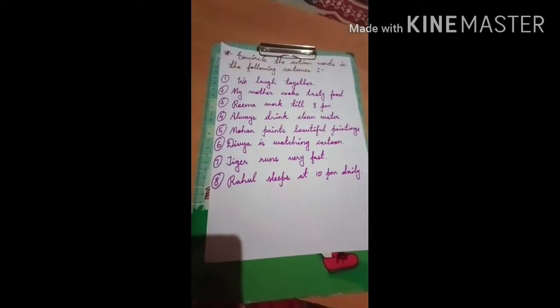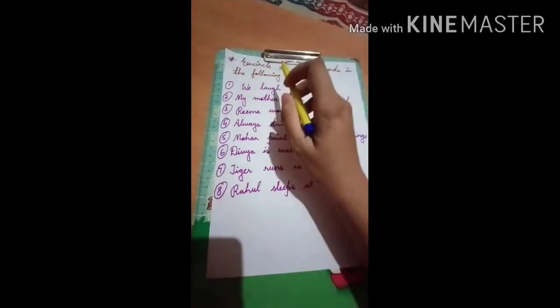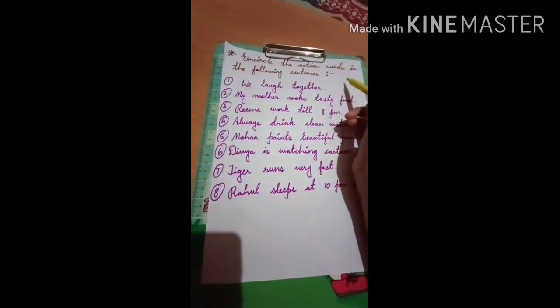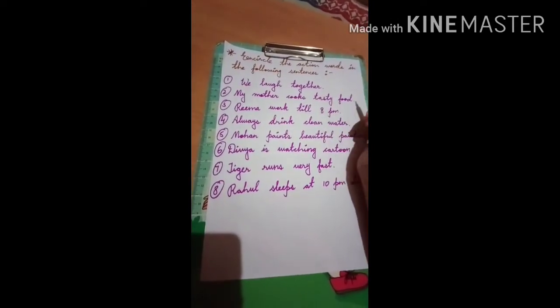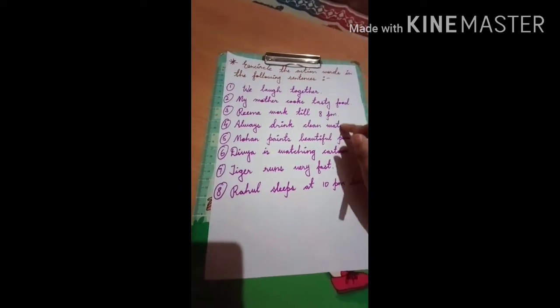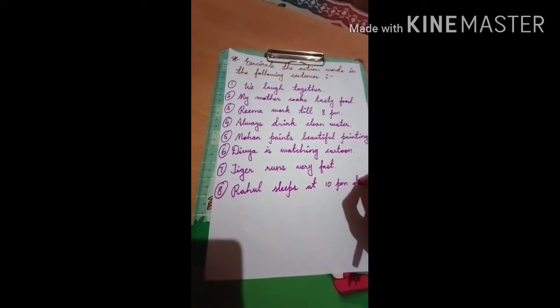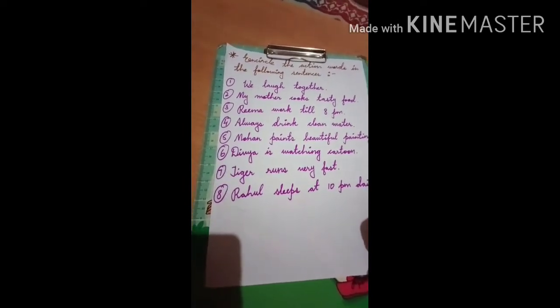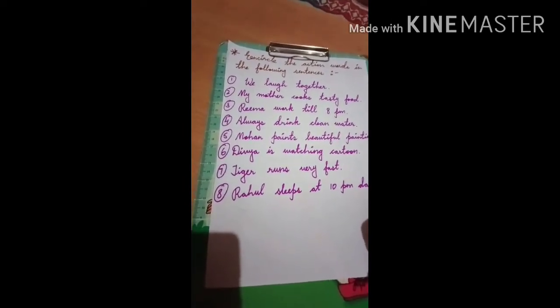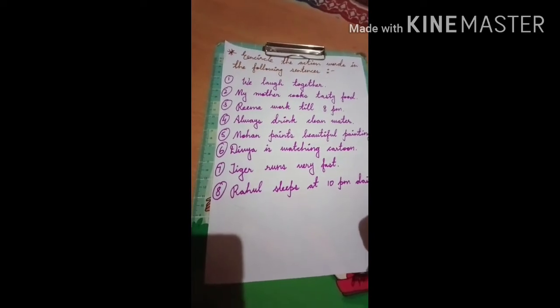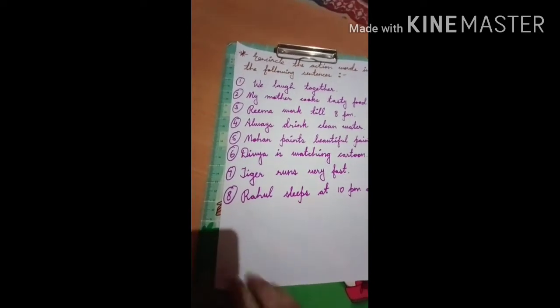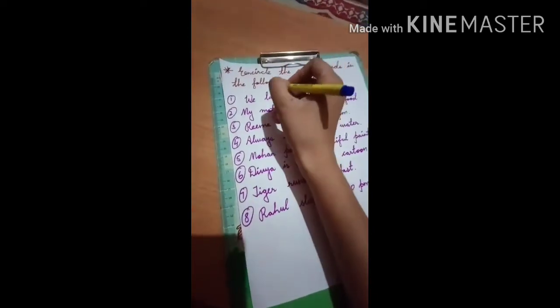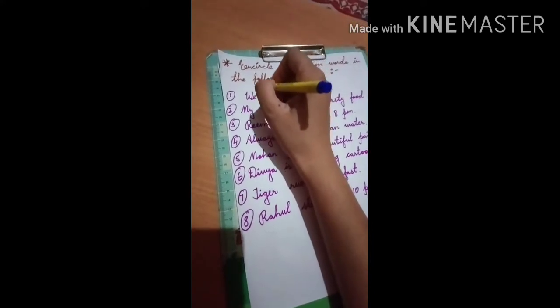Now let us do some book exercise so that you can understand properly. Question one: encircle the action words in the following sentences. Question one — 'We laugh together.' The action word here is 'laugh,' so we'll encircle 'laugh.'